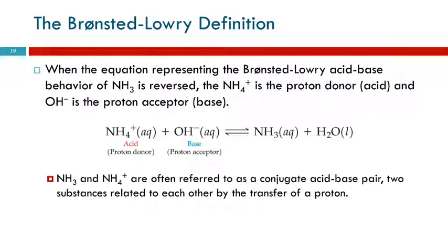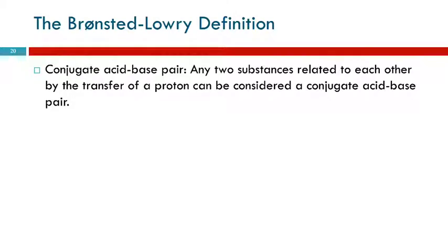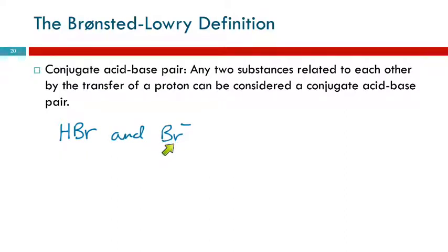You don't need a written reaction to identify conjugates — you just look at two formulas. They have to differ by one hydrogen, and the one with more hydrogens has a charge one more positive than the other. For example, HBr: if HBr donates a proton, you get Br⁻. HBr is the acid; Br⁻ is the conjugate base. You can write the equation as HBr plus H₂O, where water acts as the base accepting the proton.